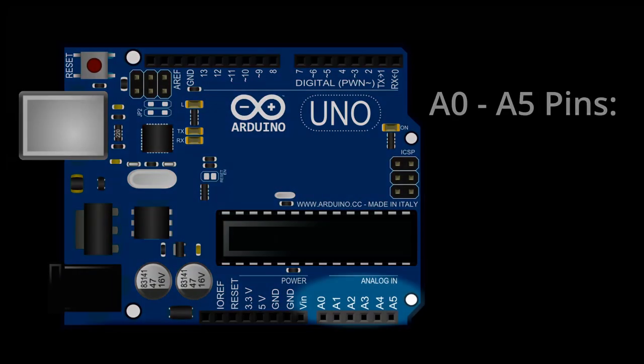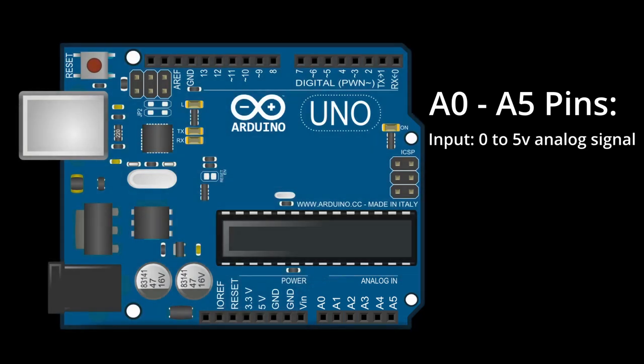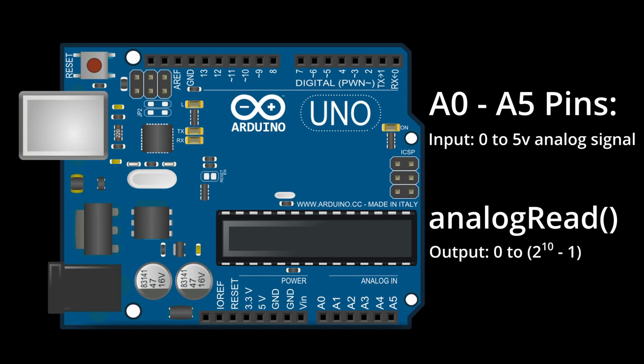The analog input pins on the Arduino Uno are designed to read analog signals between 0 and 5 volts. This input is fed through an analog-to-digital converter so that you can call the analog read function on the Arduino Uno and get back a value between 0 and 2 to the 10th power minus 1.